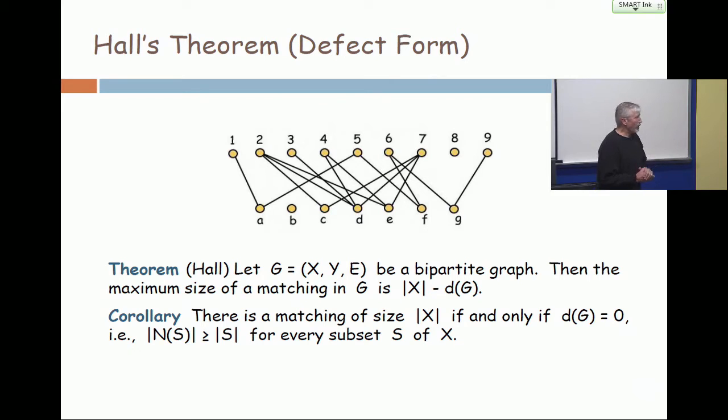But look at the corollary on the bottom. In most textbooks, this is called Hall's theorem, or the regular form of Hall's theorem. If you have a bipartite graph, it's of particular interest when can I match all of X, and that's sometimes called a complete matching.